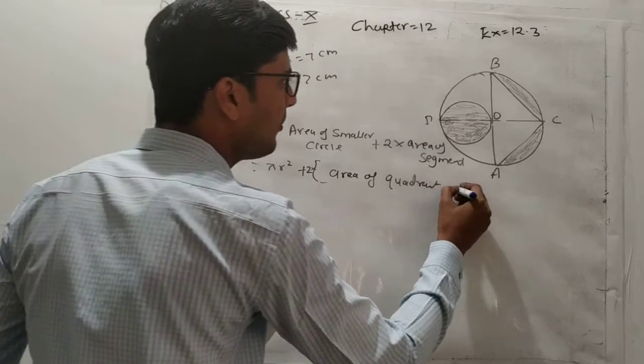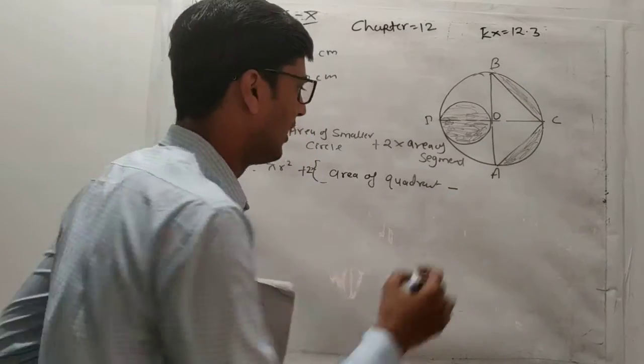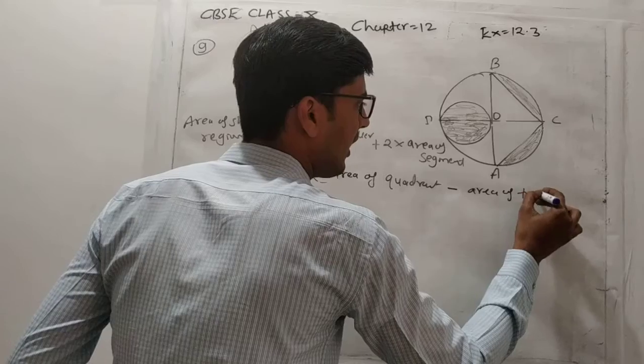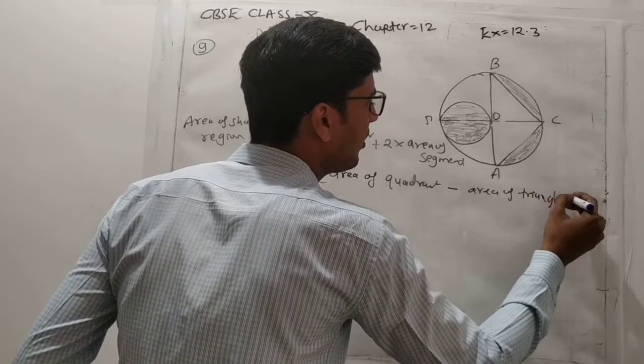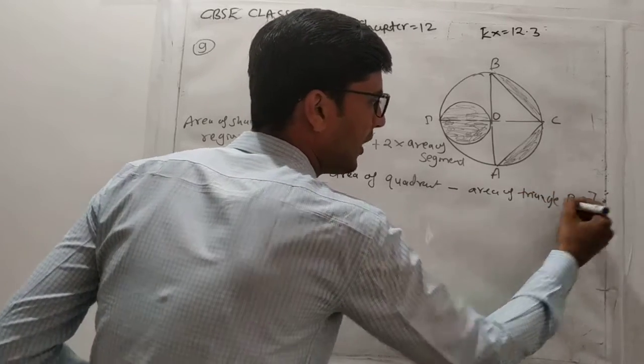Area of quadrant minus this is your right angle triangle, so area of triangle. Is that clear?